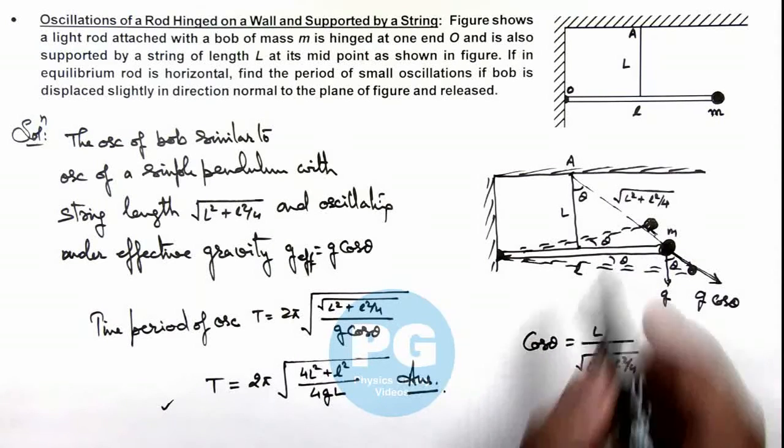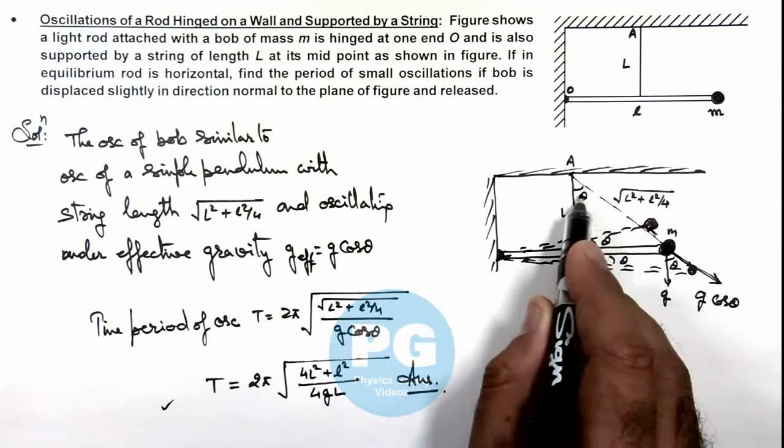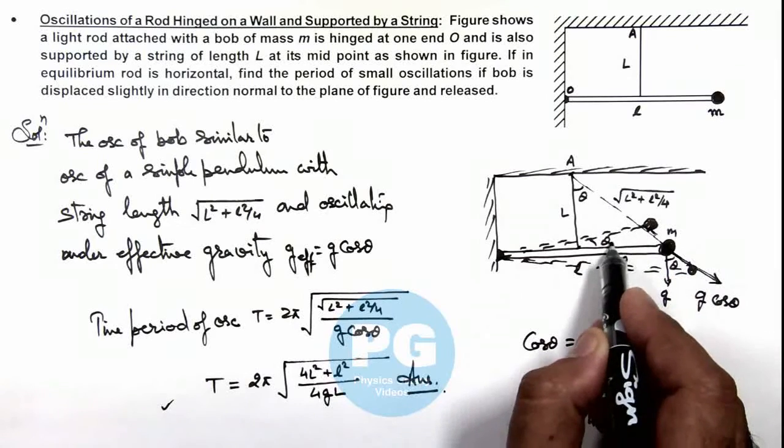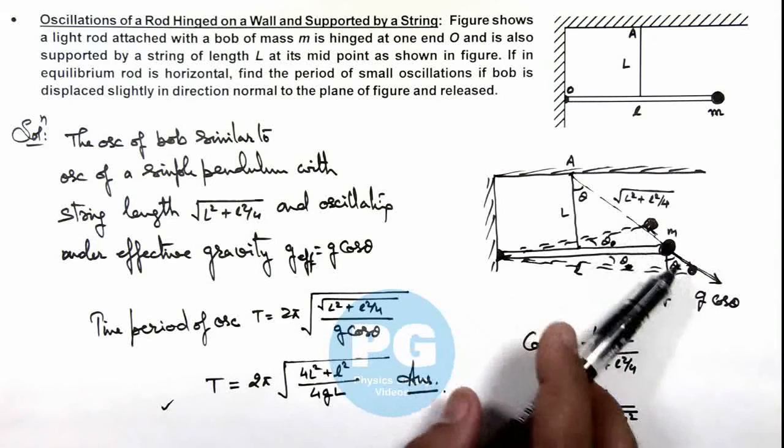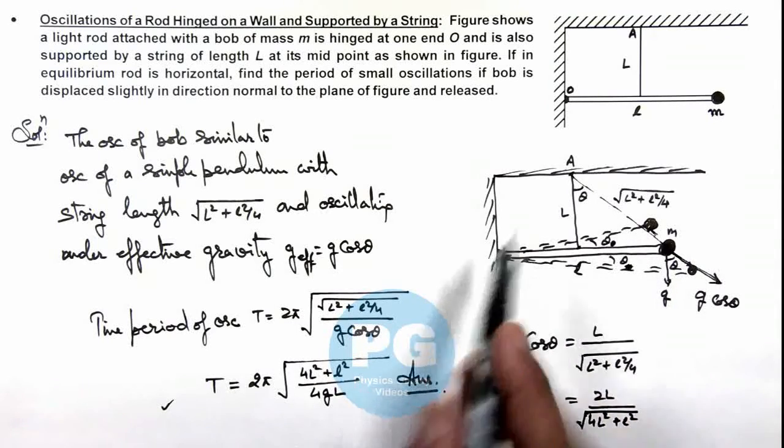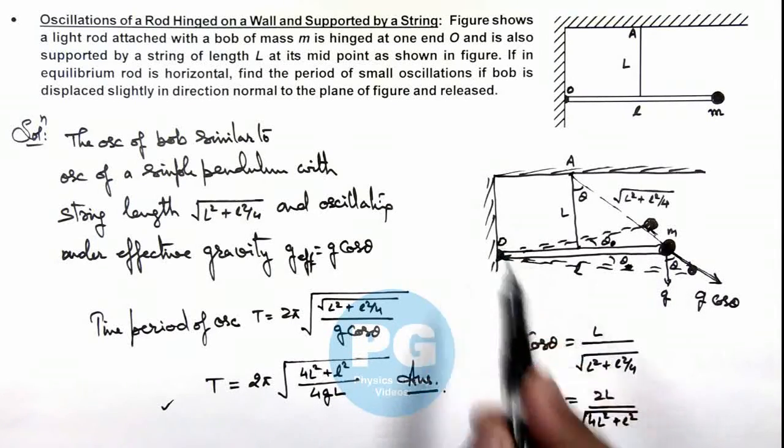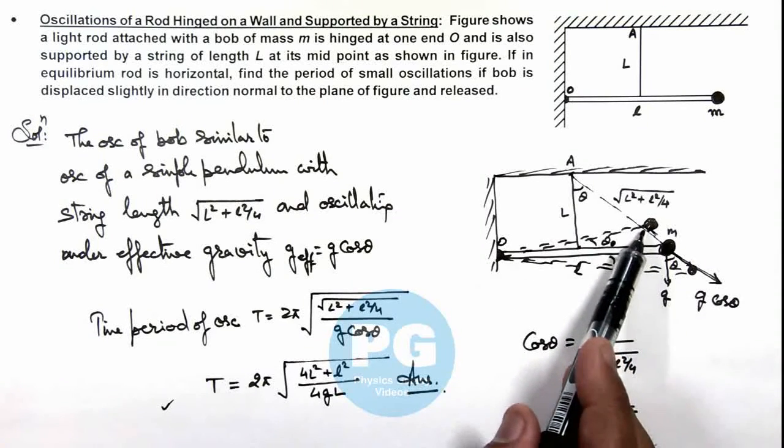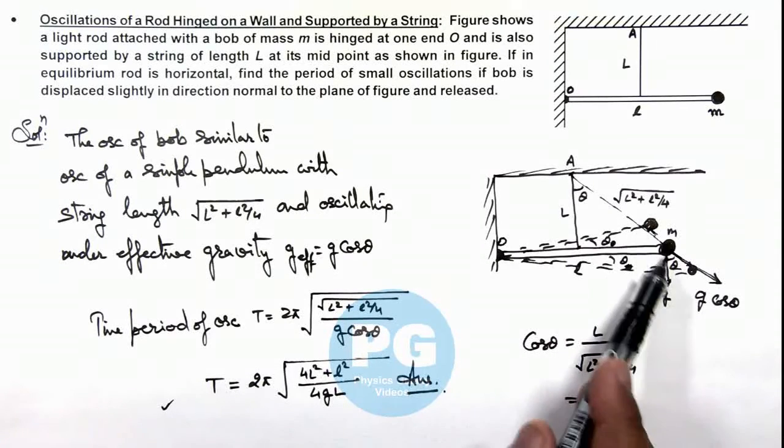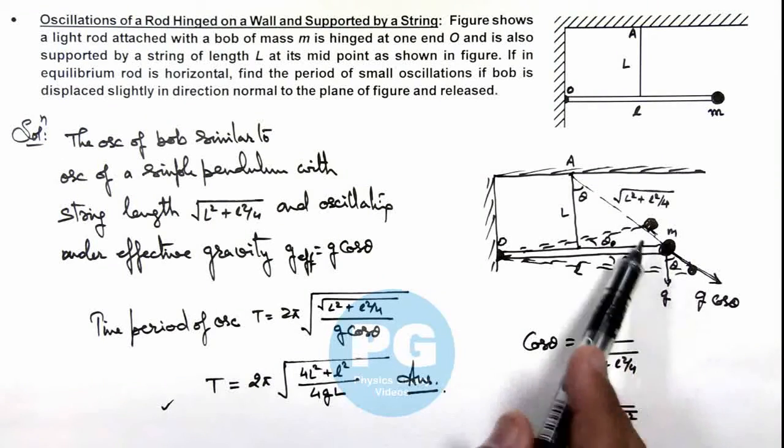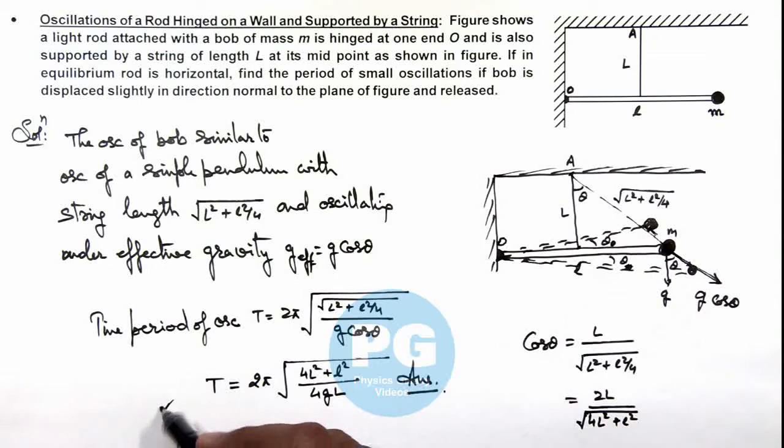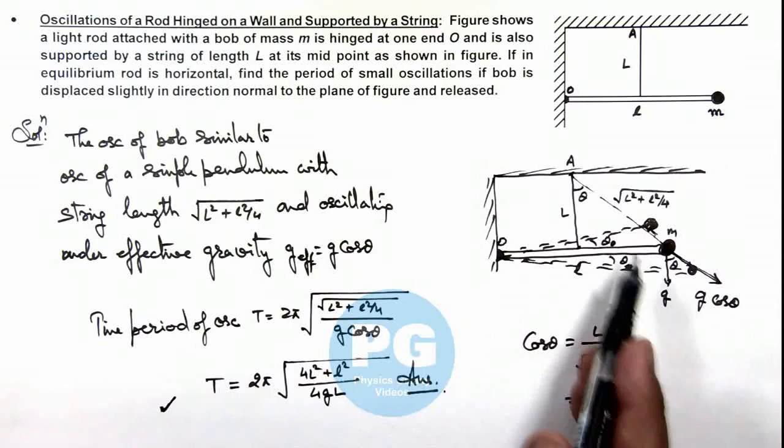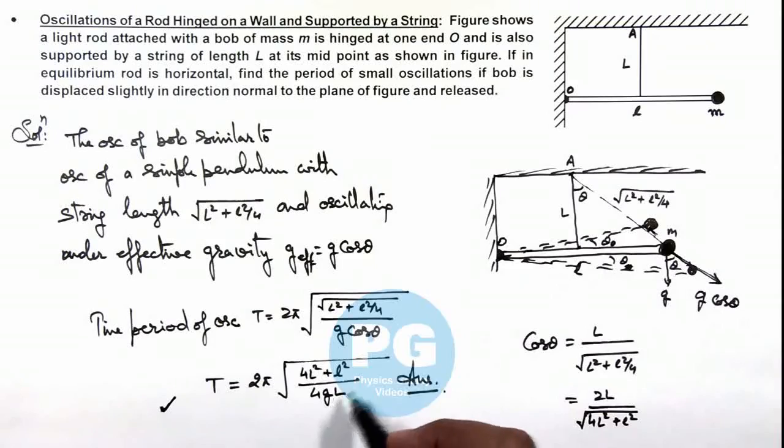The angular amplitude theta not is the angular amplitude under which the bob is oscillating with respect to the hinged point O. At an angle θ, we can find out the restoring torque bringing the bob back, and using the concept of angular SHM, you can find out its angular frequency and get the same result. I am leaving it as an exercise for you to derive this result using the conventional method of simple harmonic motion.